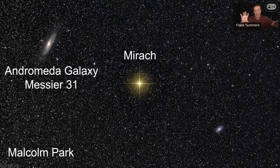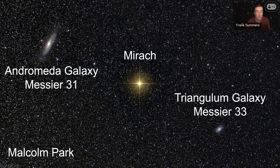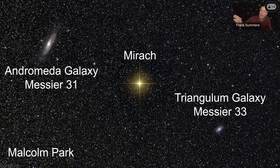The Andromeda Galaxy is also known as Messier 31. One of the stars you use to find it is Mirach in the constellation Andromeda — you go from the Great Square in Pegasus, count up a couple stars to Mirach, then go over a little bit. On the other side of Mirach is the Triangulum Galaxy, also known as Messier 33, another nearby galaxy in our local group.